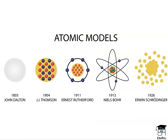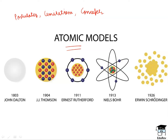So, let's move on to the second portion of our chapter, which is atomic models. In this portion, we will be discussing the postulates, the limitations, and the concepts of atomic models proposed by Democritus, John Dalton, J.J. Thomson, Ernest Rutherford, Niels Bohr, and Schrödinger.